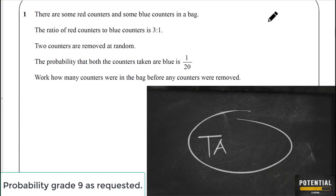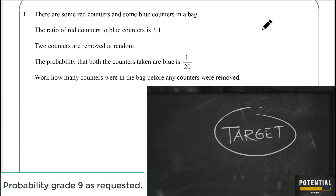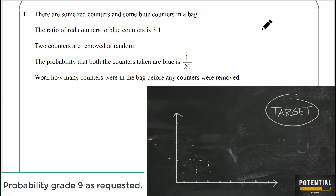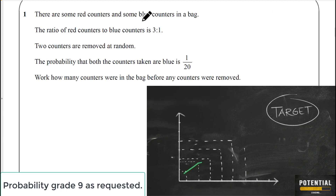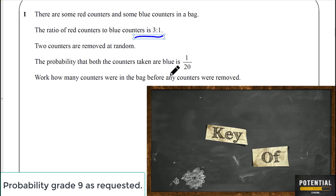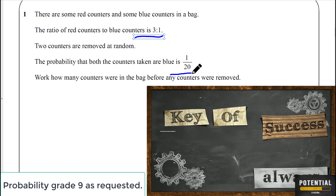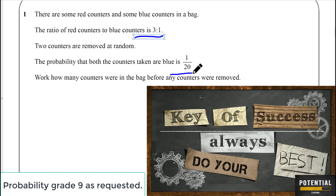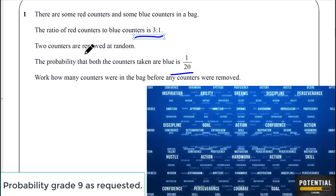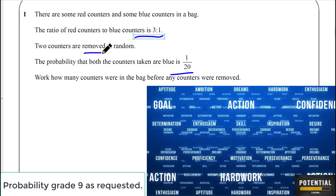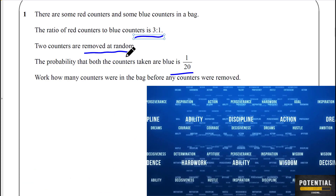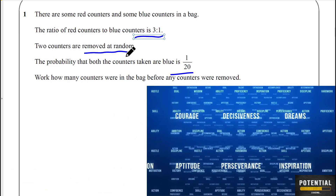A student has asked to go through a Grade 9 probability question, so we're going to work through a mixture of questions so you can pick up the skill. The ratio is an important key part. We're given that the probability both counters taken are blue is 1 over 20, and 2 counters are removed at random — they are not replaced. That's conditional probability.